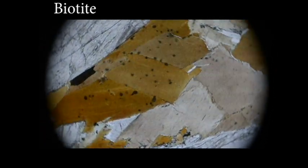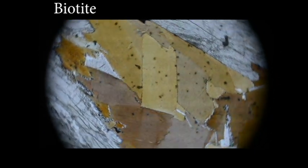Pleochroism is a feature seen in plane polarized light. This mineral in the center is biotite. We see lots of different phases of it because we see different colors.